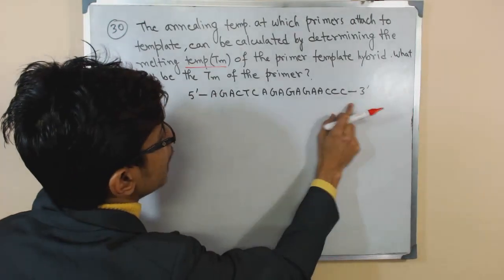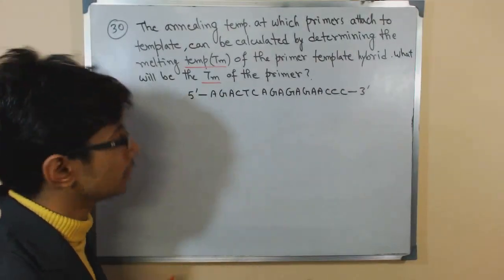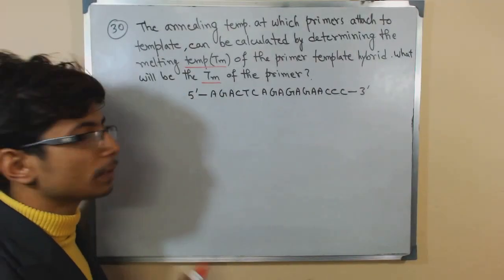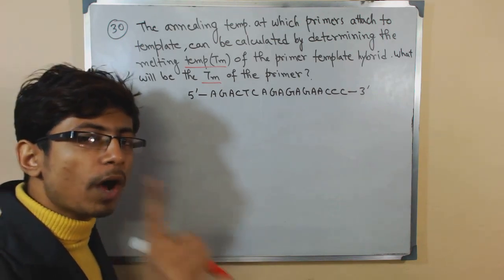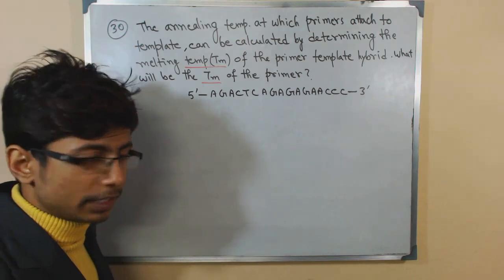You can see here this is the primer and the question is what is the Tm of that primer - Tm means the melting temperature. The melting temperature can be calculated by using one simple formula and by looking at the primer that is given here.